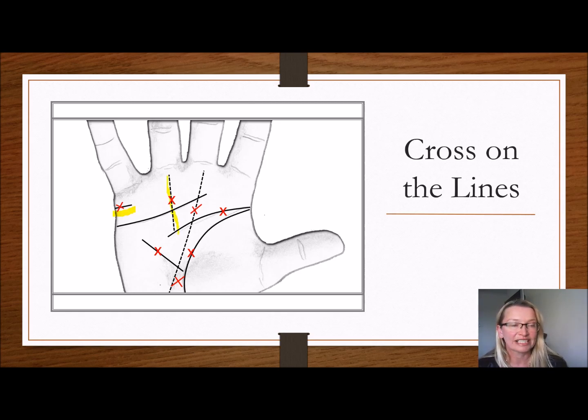On the success line. On the success line, because that represents success and happiness, that too can depict a loss in reputation or some kind of a loss in their pursuit of success. So they have an obstacle towards that goal.